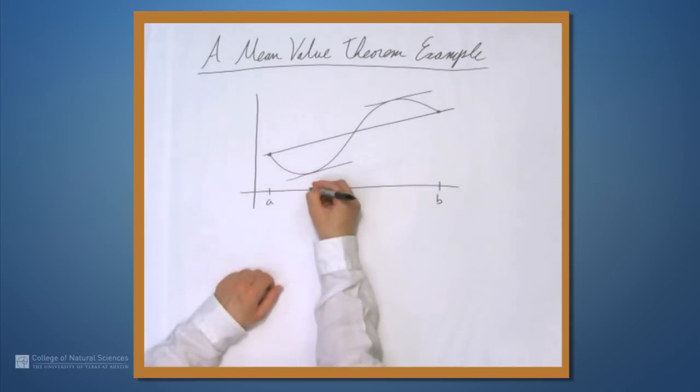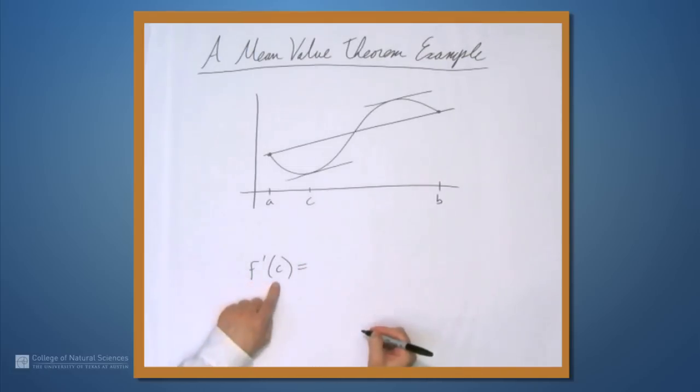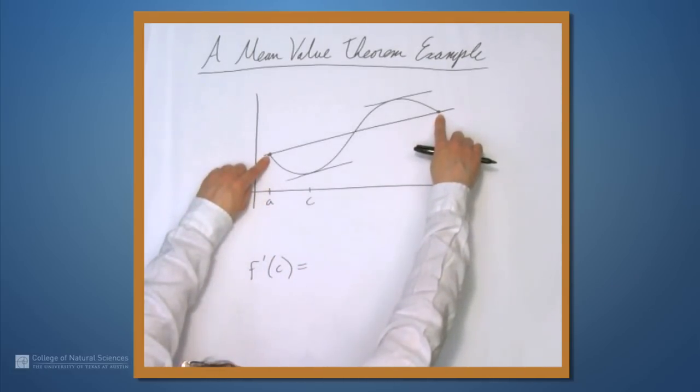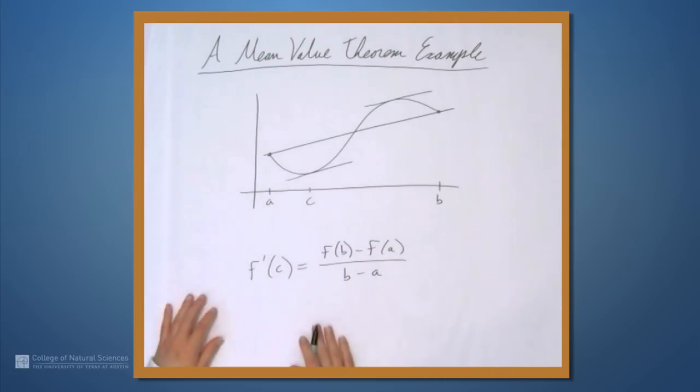Let's just look at this guy here. Let's call this value c. So what the mean value theorem says is that there is always a c between a and b such that the derivative at c is this slope. So this slope is f(b) - f(a) over b - a. That's what the mean value theorem says.